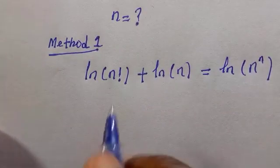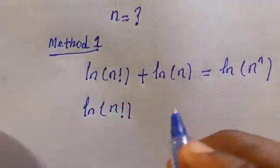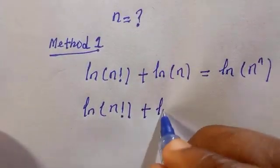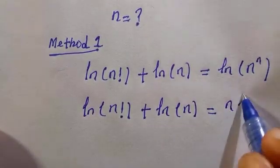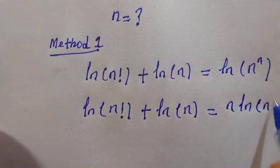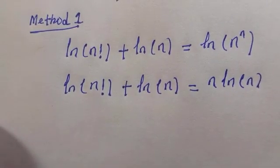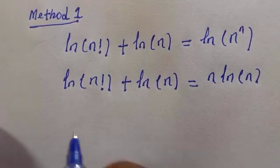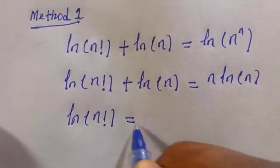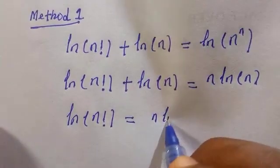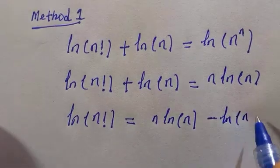We apply the basic laws of logarithm: ln of n factorial plus ln of n equals n times ln of n. Transferring ln of n to the other side gives us: ln of n factorial equals n·ln(n) minus ln(n).